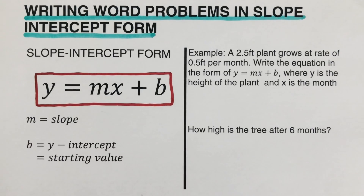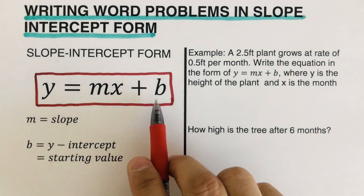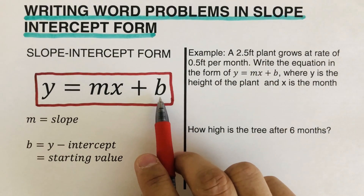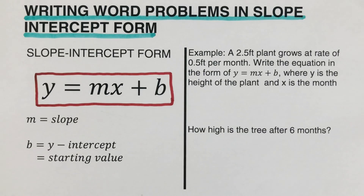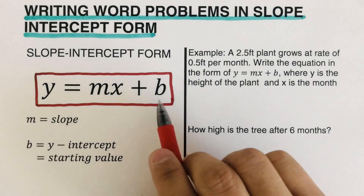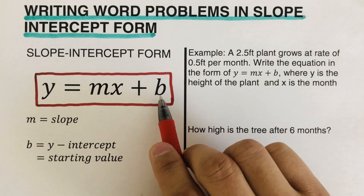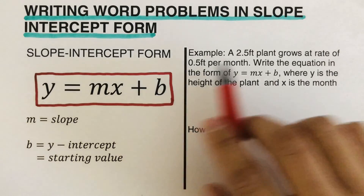So the question would be: how much does it grow by? And then b is the y-intercept, otherwise called the starting value or the initial value — pretty much the value of y when x is zero. That is the y-intercept.